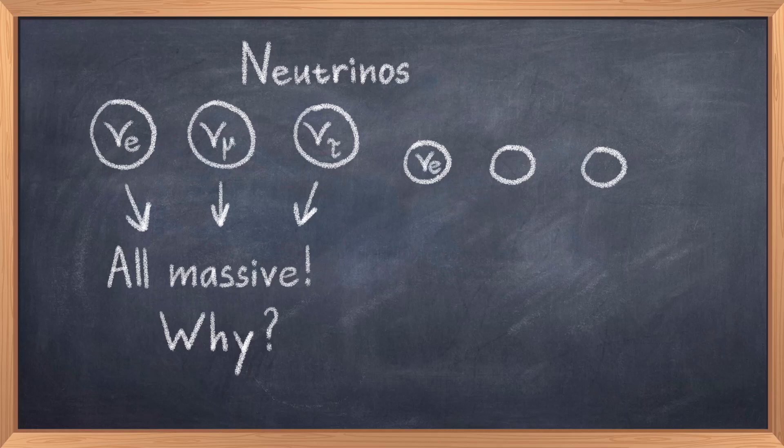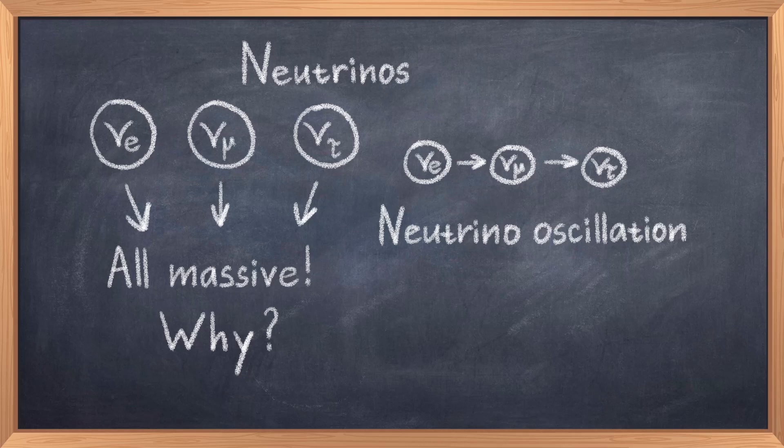Here, neutrinos have this interesting property that when they propagate in space, they can change flavor. Thus an electron neutrino can change into a tau neutrino, and this is all beyond the standard model, and only allowed if neutrinos mass is non-zero. This is also called neutrino oscillation.